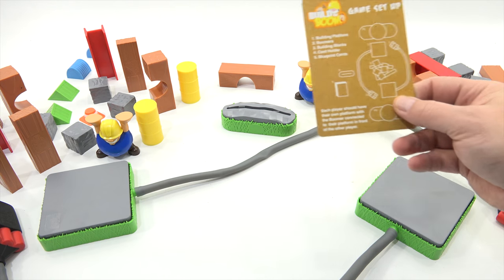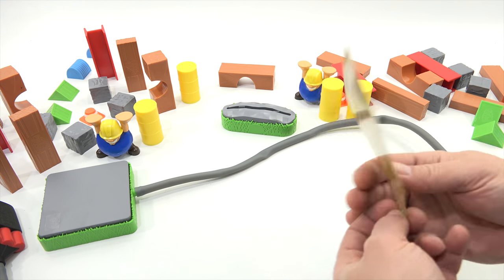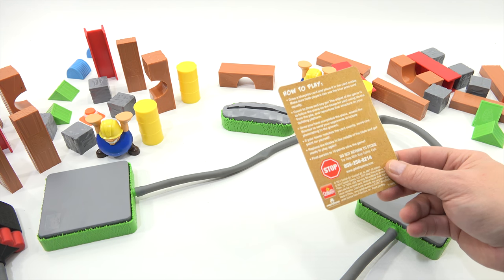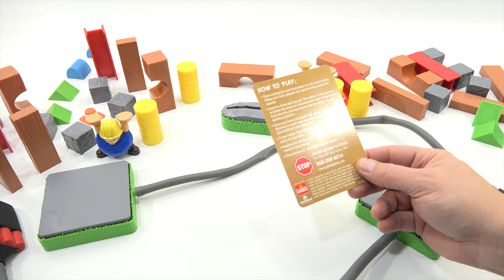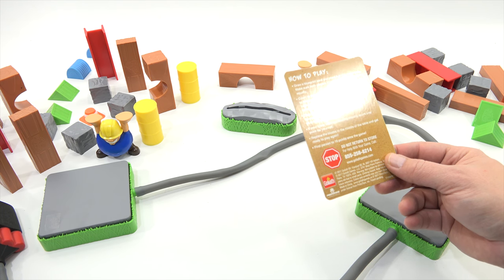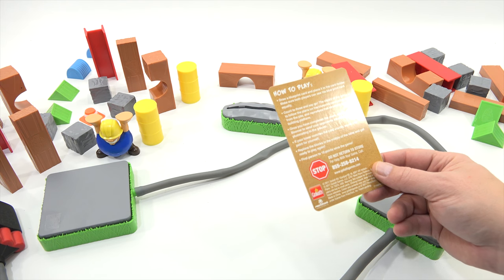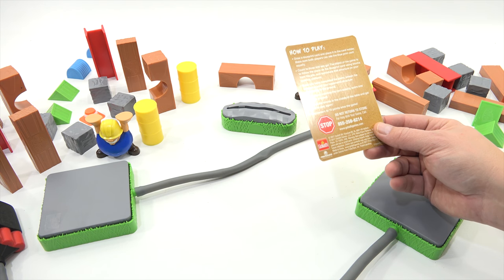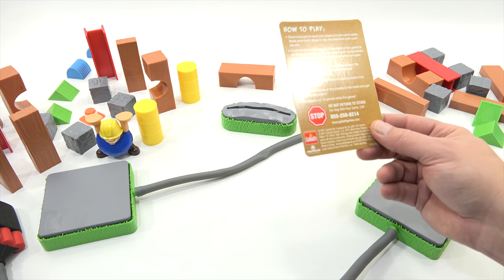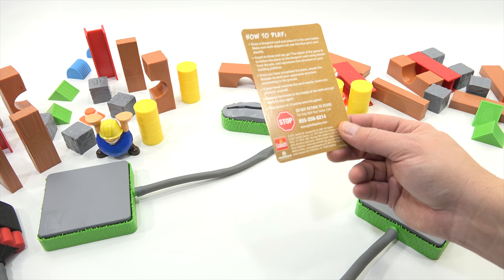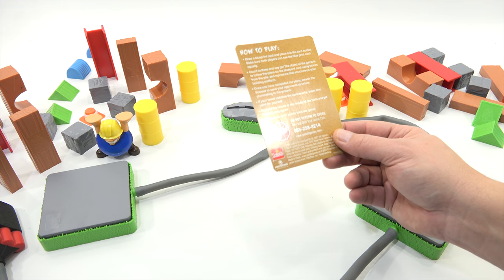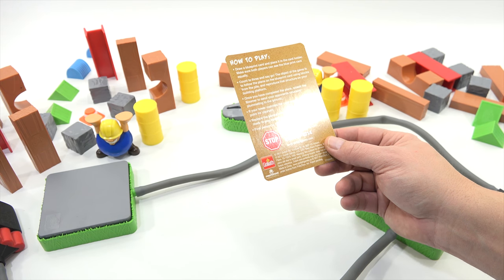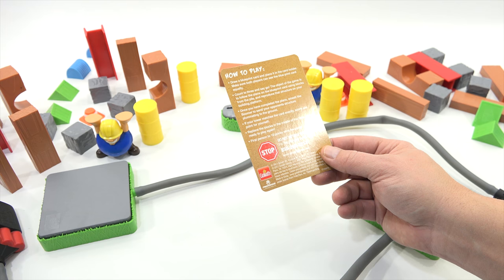The only thing they don't tell you is if you build the structure wrong. Here, each player should have their own platform with the boomer. Got it. Draw a blueprint card. Put it in the card holder. Make sure both players can see the blueprint card. That's why you're playing across from each other. Yes. Count to three and say go. So you put the card in, and then one, two, three, go. The objective of the game was to follow the plans on the blueprint card using blocks from the pile and reproduce that structure on your building platform. Once you have completed the plans, smash the boomer to send your opponent's structure plummeting to the ground. If your tower matches the card exactly, score one point for yourself. Okay. Now, I think if you make the structure wrong, I think you should lose a point, but it doesn't say that. And then replace the blocks in the middle of the table and get ready to play again. First person to ten points wins the game.